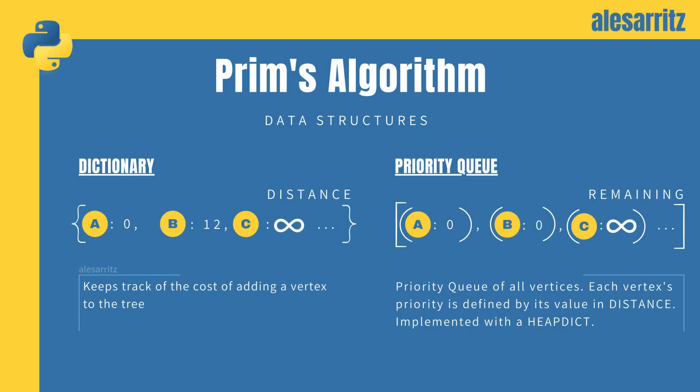We will also need a dictionary called distance, which will keep track of the cost of adding a vertex to the tree and will be initialized to infinity.